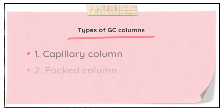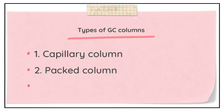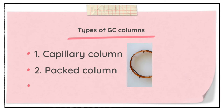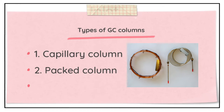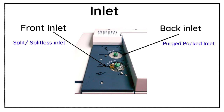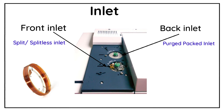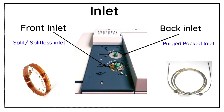The reason for having two inlets is that there are two types of GC columns — one is the capillary column and the second is the packed column. Whenever a capillary column is required for analysis, the split/splitless inlet will be used, and when the packed column is required for analysis, the purged packed inlet will be used. I hope you have understood the difference between the two types of inlets.